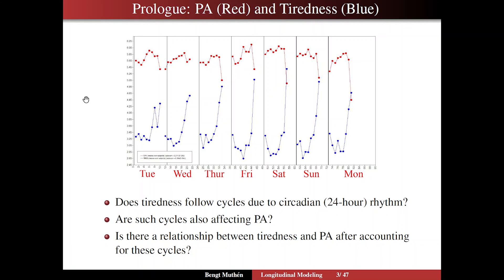You may ask yourself: what is the relationship between PA and tiredness? When tiredness is low, positive affect tends to be high, and when tiredness goes up, positive affect goes down. We see a distinct opposite-cycles feature for the two outcomes. This raises the question: is positive affect just another measure of not being tired? Does positive affect convey something beyond just being tired? That is, is there a relationship between tiredness and positive affect after accounting for — controlling for — these circadian 24-hour rhythms? That is a key topic we will return to towards the end of this talk.